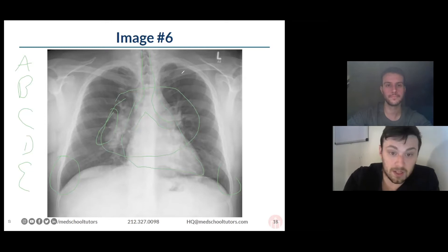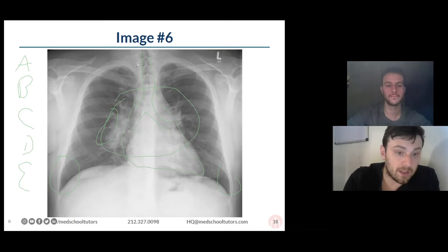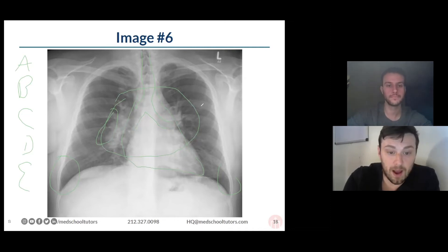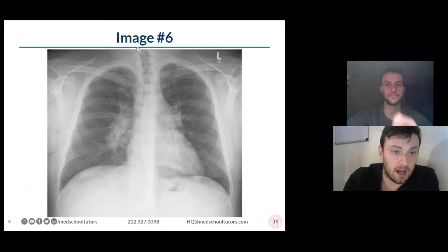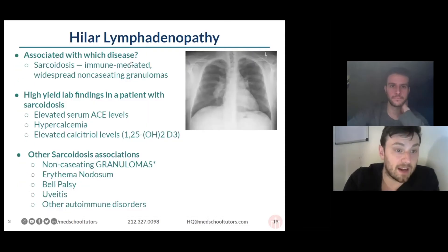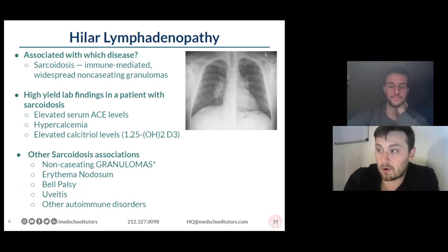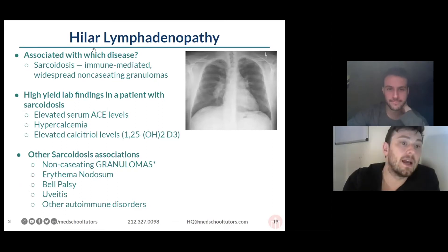You make sure to look at the clavicles. Key things you're looking for: pneumothorax, cardiomegaly, fluid at the costophrenic angles, or in this case hilar lymphadenopathy. I saw from a couple of people the answer sarcoidosis.